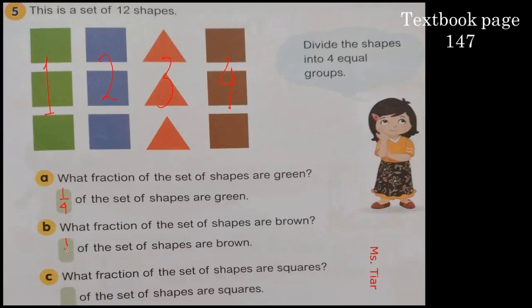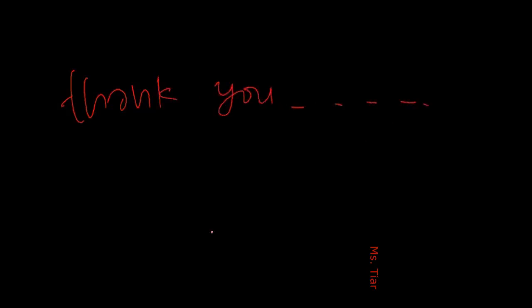What fraction of the shapes are squares? Be careful — the question is about squares, not color. We have three groups of squares out of four groups, so three out of four groups of the set of shapes are squares. If you have any questions, please contact me. Thank you so much, guys — bye bye!